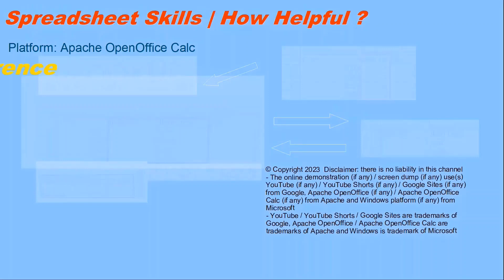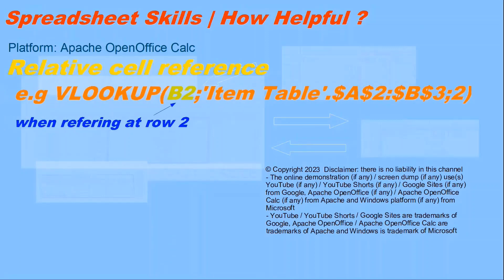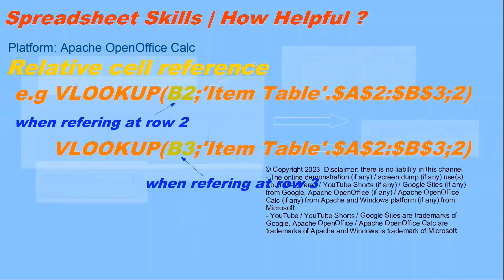Relative Cell Reference: the cell reference will be changed accordingly relative to the current reference. For example, it is B2 when it is at row 2, and it is B3 when it is at row 3.